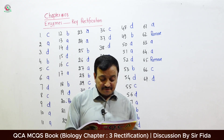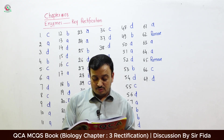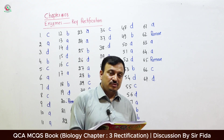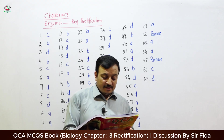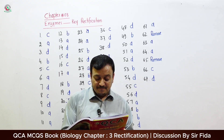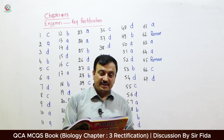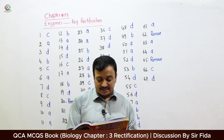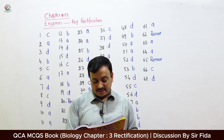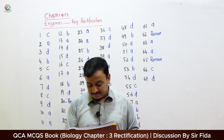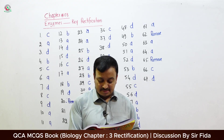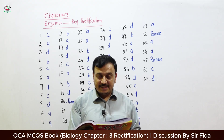Question 50: Those enzymes which are involved in oxidation-reduction reactions are called — correct answer A: Oxidoreductase. Question 51: Those enzymes which are used to join two units of substrate are called — Ligase. Question 52: All of the following enzymes belong to transferase except — correct answer D: Epimerase.